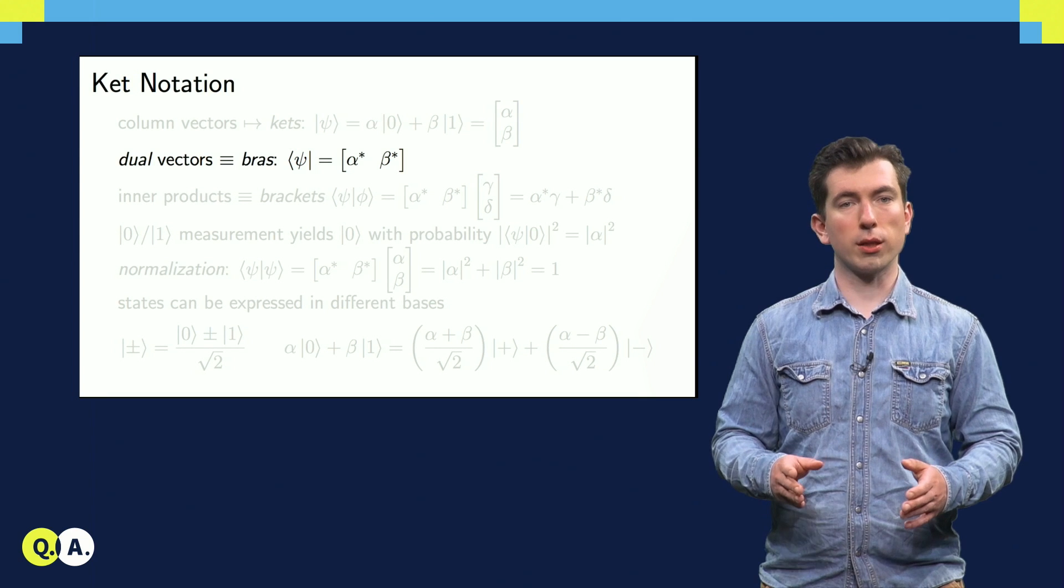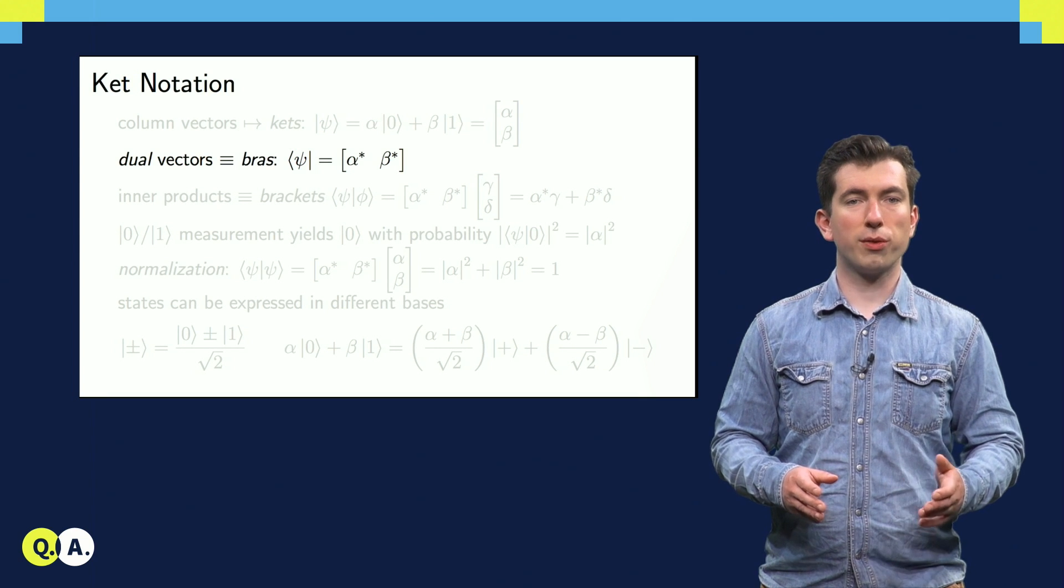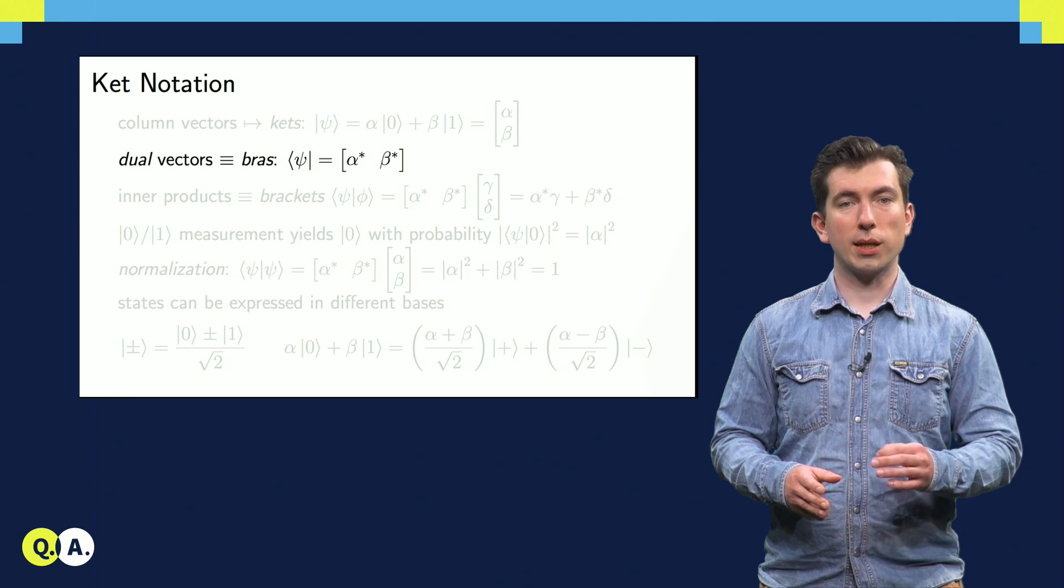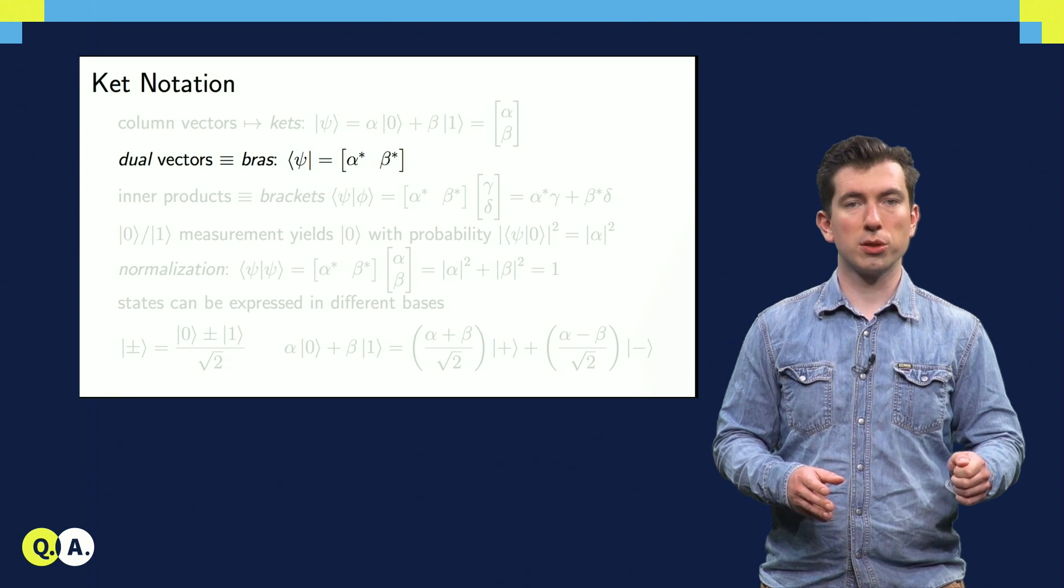In a departure from regular linear algebra, there is a well-defined dual vector for each quantum state called a bra, which we can obtain by taking the complex conjugate and the transpose of the ket vector.